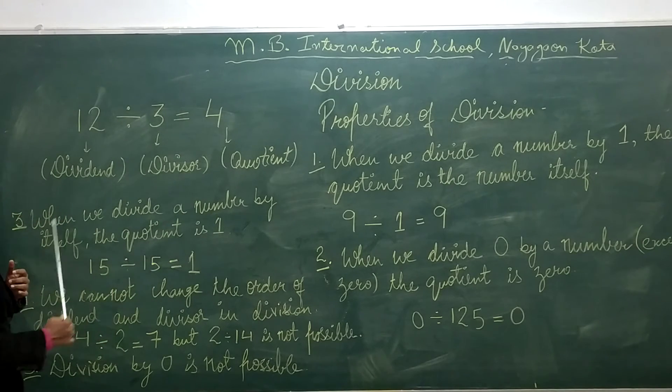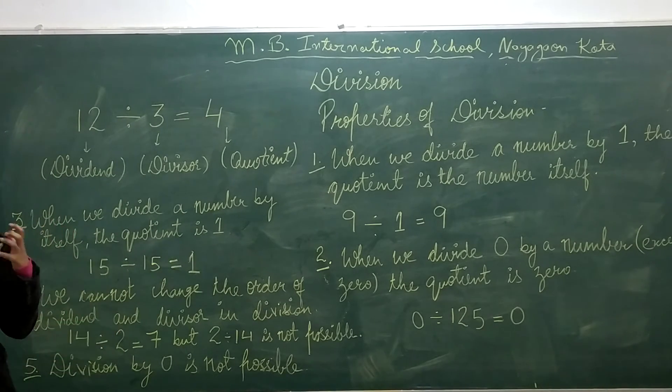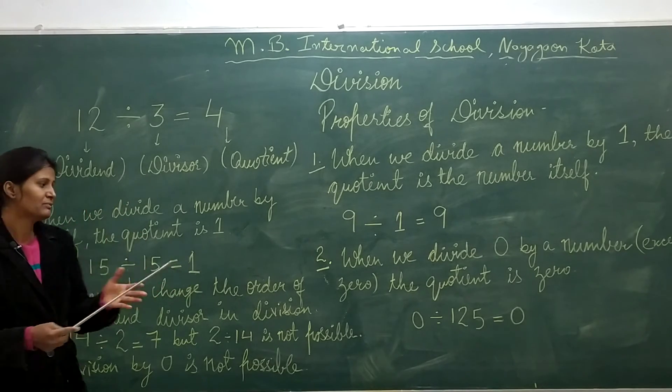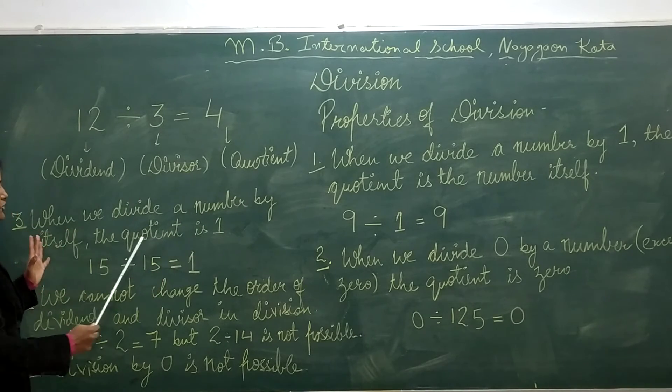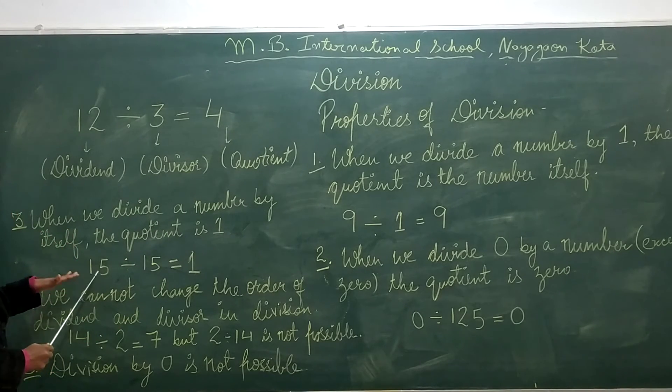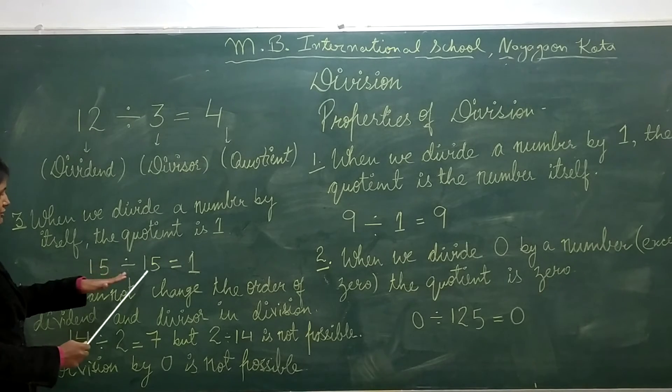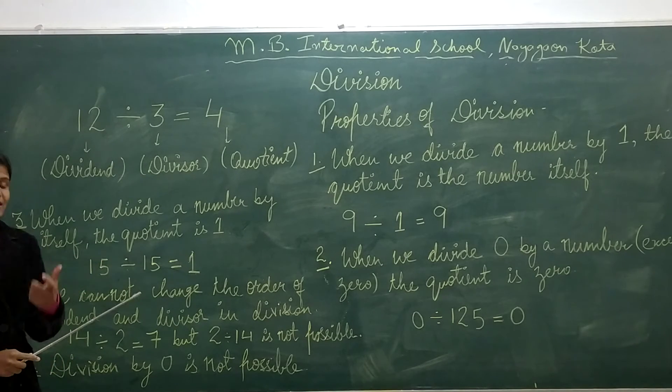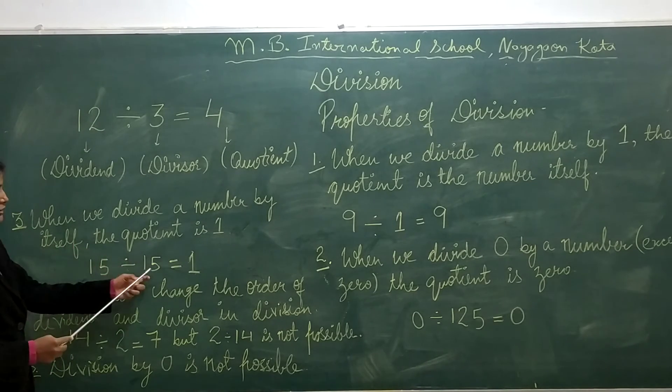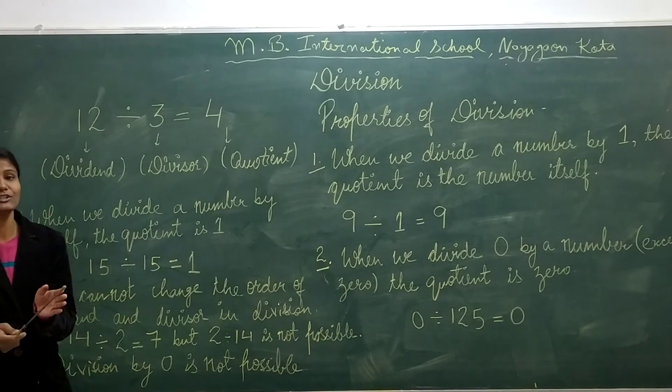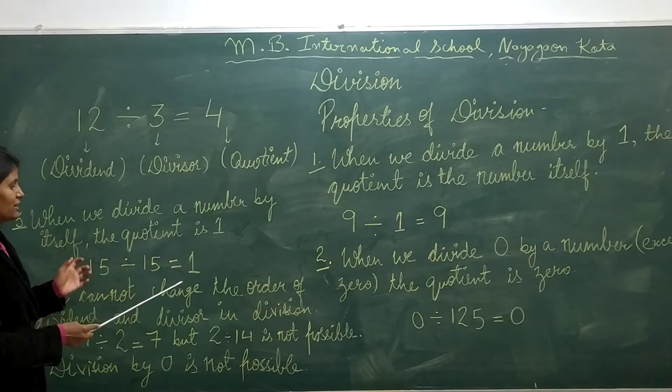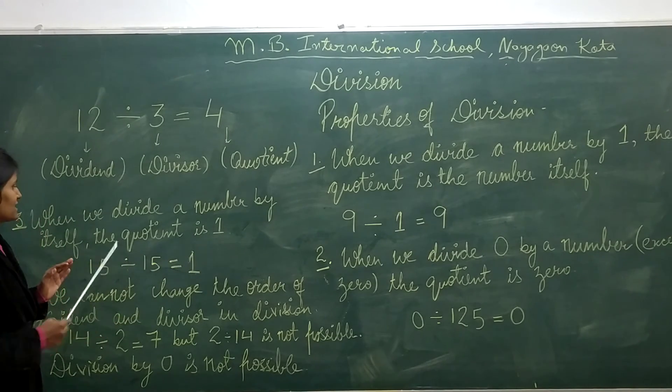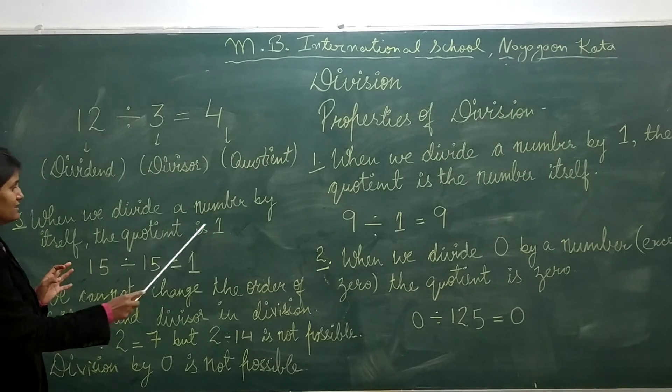Third, when we divide a number by itself, the quotient is 1. For example, 15 divided by 15 equals 1. If we have to distribute 15 toffees among 15 children, how many toffees does each child get? One. So when we divide a number by itself, the quotient is 1.